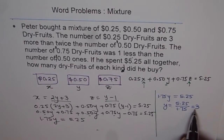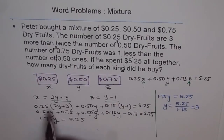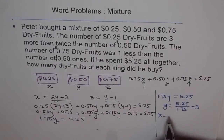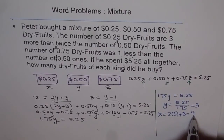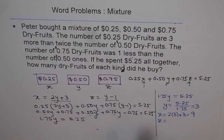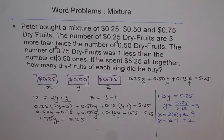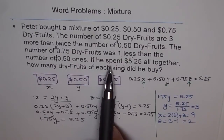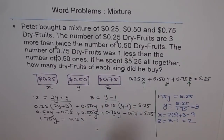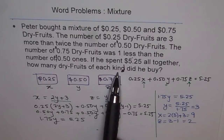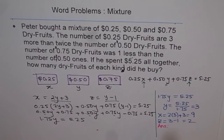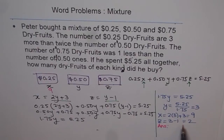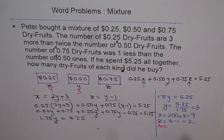Now that we have Y = 3, we can find X and Z. X = 2Y + 3, which means 2 times 3 plus 3: 6 + 3 = 9. And Z = Y − 1, that means 3 − 1 = 2. So X = 9, Y = 3, and Z = 2.